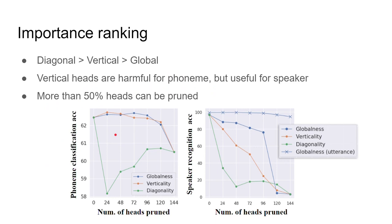The model of utterance level uses mean pooling followed by one linear layer. Here is the pruning result. Lines with dots are conducted at frame level, and lines with crosses are at utterance level. First, diagonal attention is the most important. Pruning them has significant impact on both tasks. Second, both vertical and global attention have little contribution to phoneme classification. Even more, pruning them can help the performance.